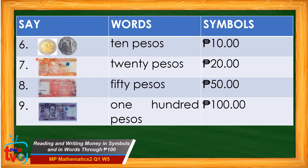For number seven, we have the twenty-peso bill. We say twenty pesos. If we write it in words, we write the words twenty then pesos. And if we write it in symbols, we write first the peso sign then the amount which is twenty followed by a decimal point and two zeros. We read this as twenty pesos.